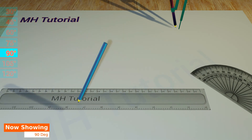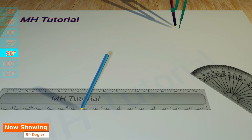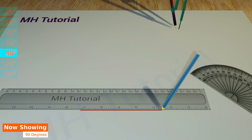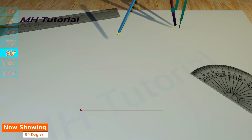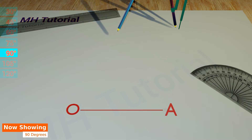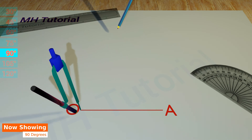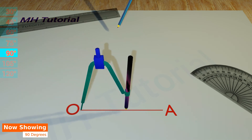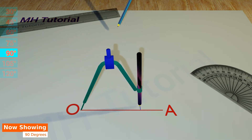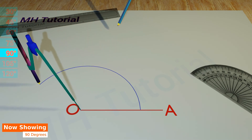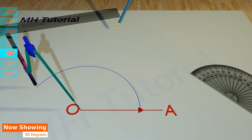For a 90 degrees angle, a straight line is drawn on the middle of the page. The two endpoints are named point O and point A. Next, a pencil compass is taken and a circle arc is drawn while keeping its tip at point O. This arc intersects the straight line OA at point W.